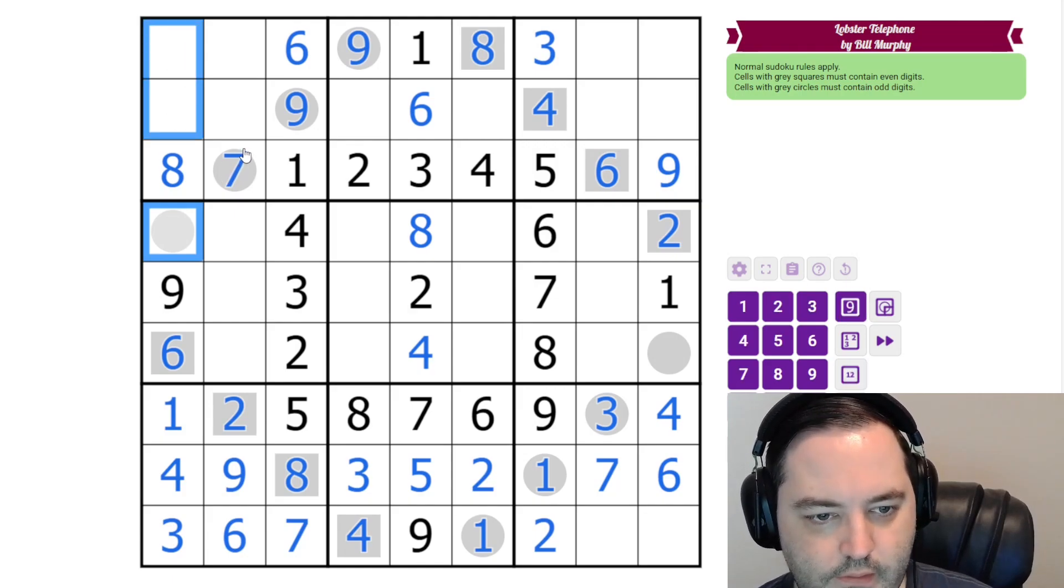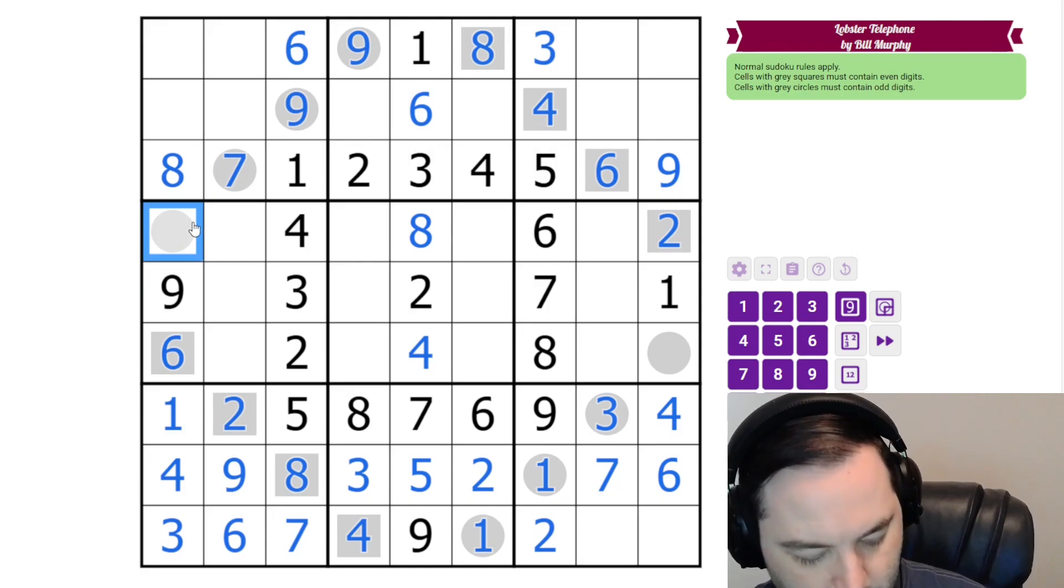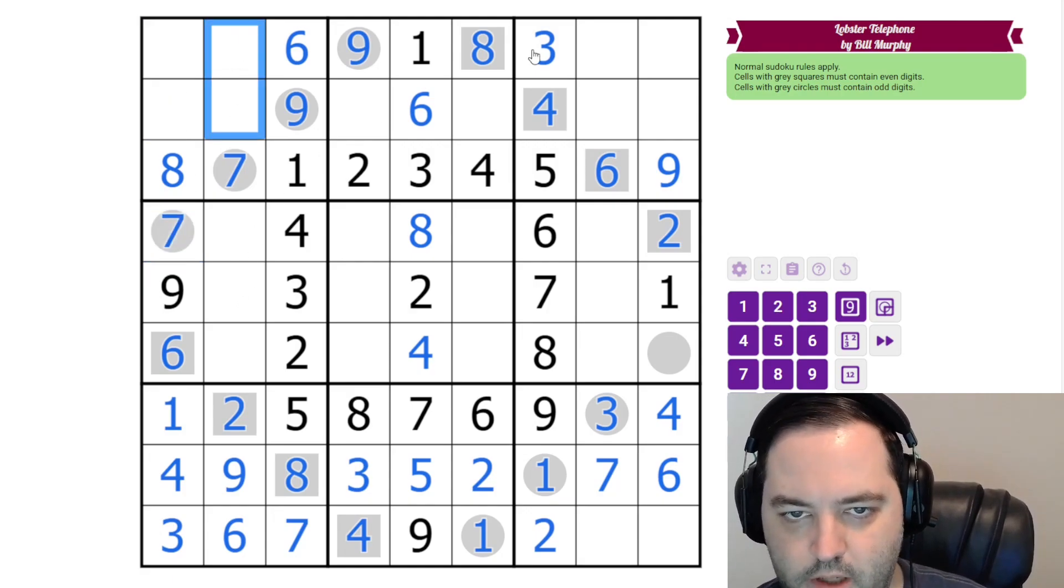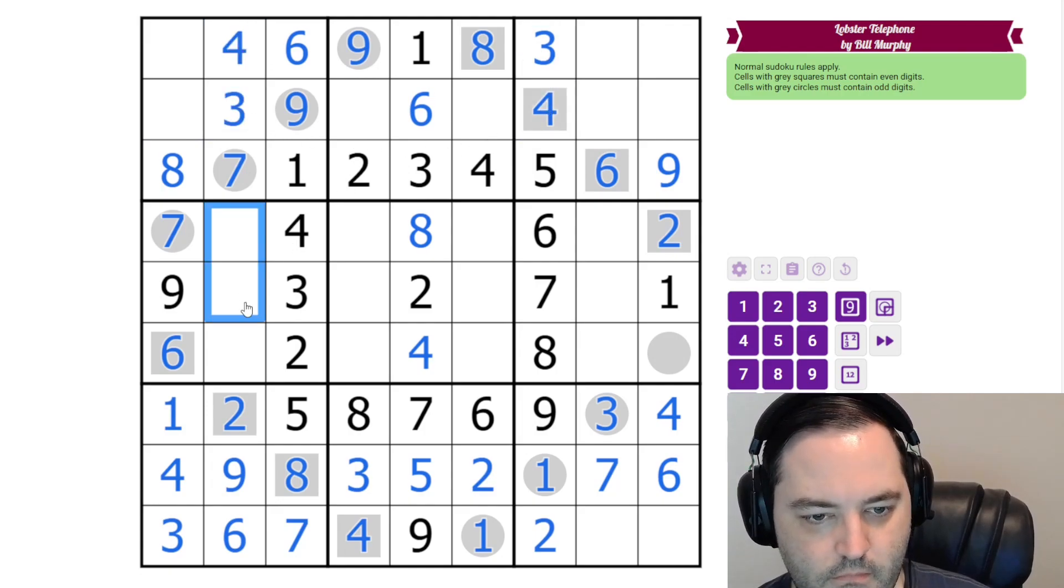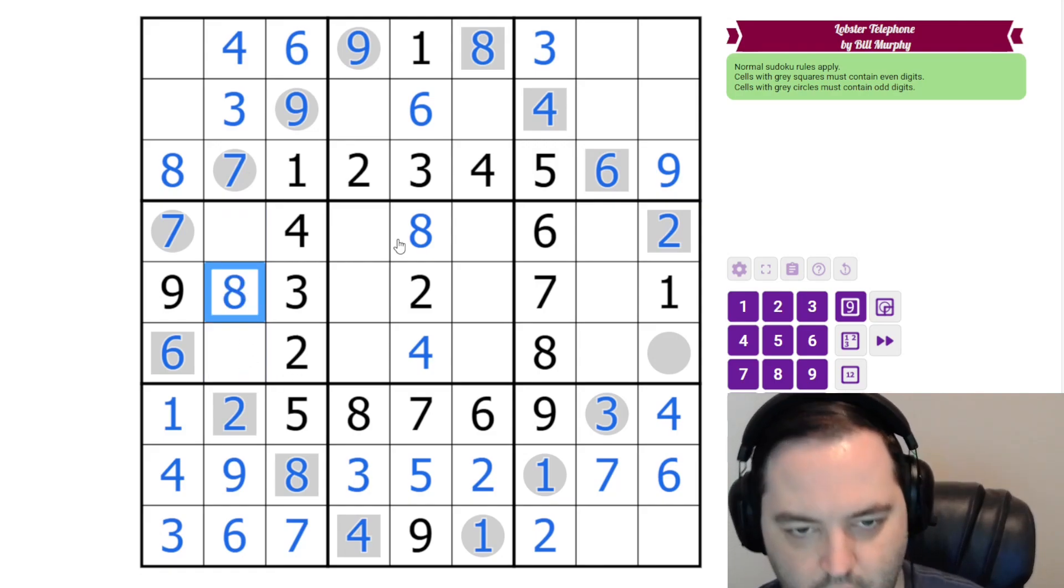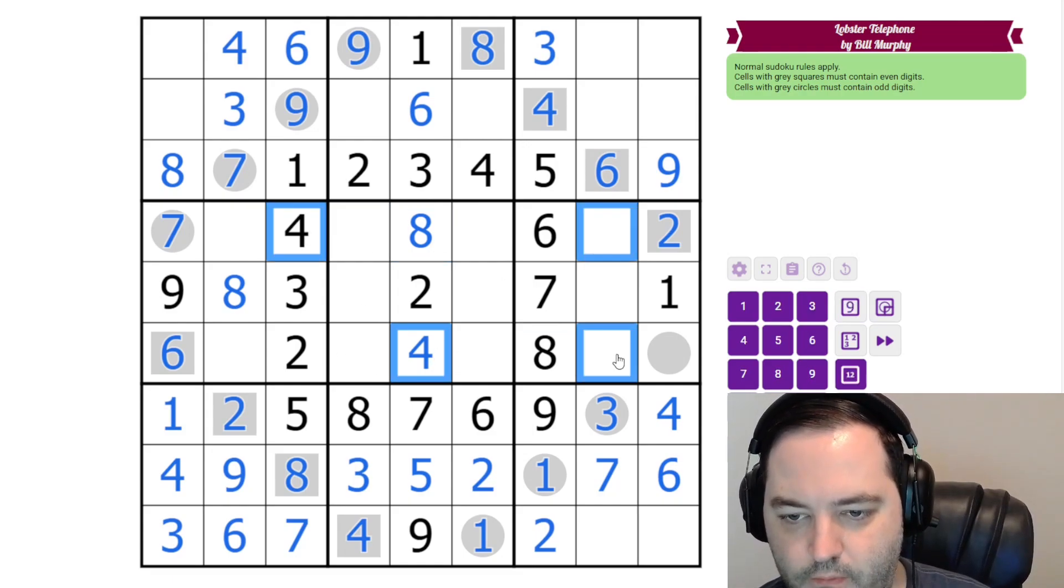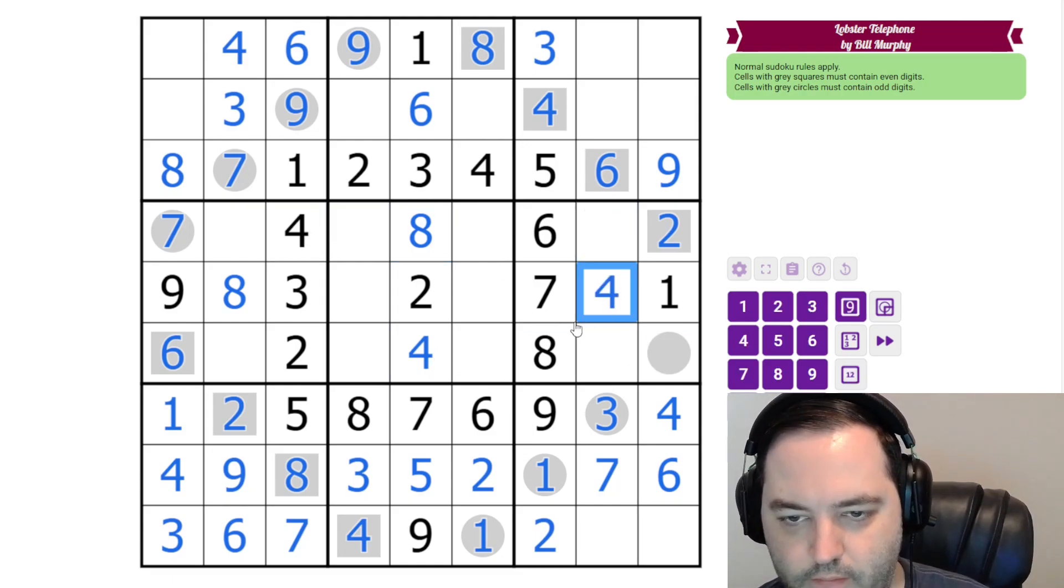Now we need two, five, and seven here. The seven means this must be seven. And this is a two, five pair. And what's left in the box is three and four. And we know the order of those. These are one, five, and eight. It's the only place for eight is these two eights. And in fact, we can do the same with four over here. It's the only place for four.